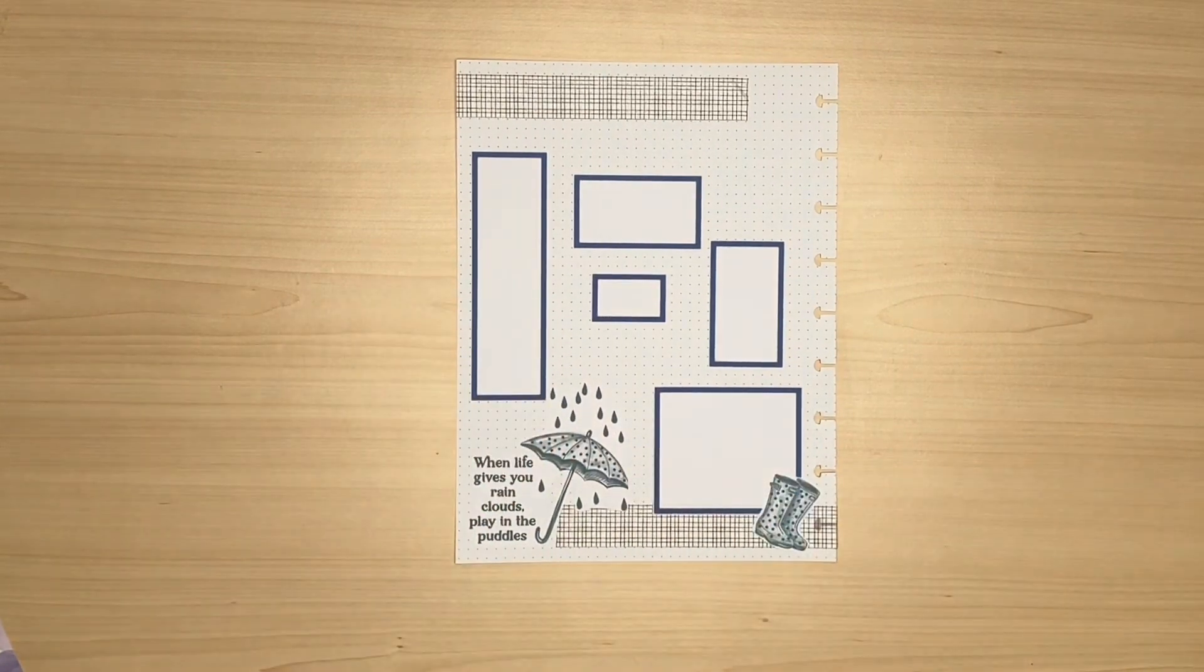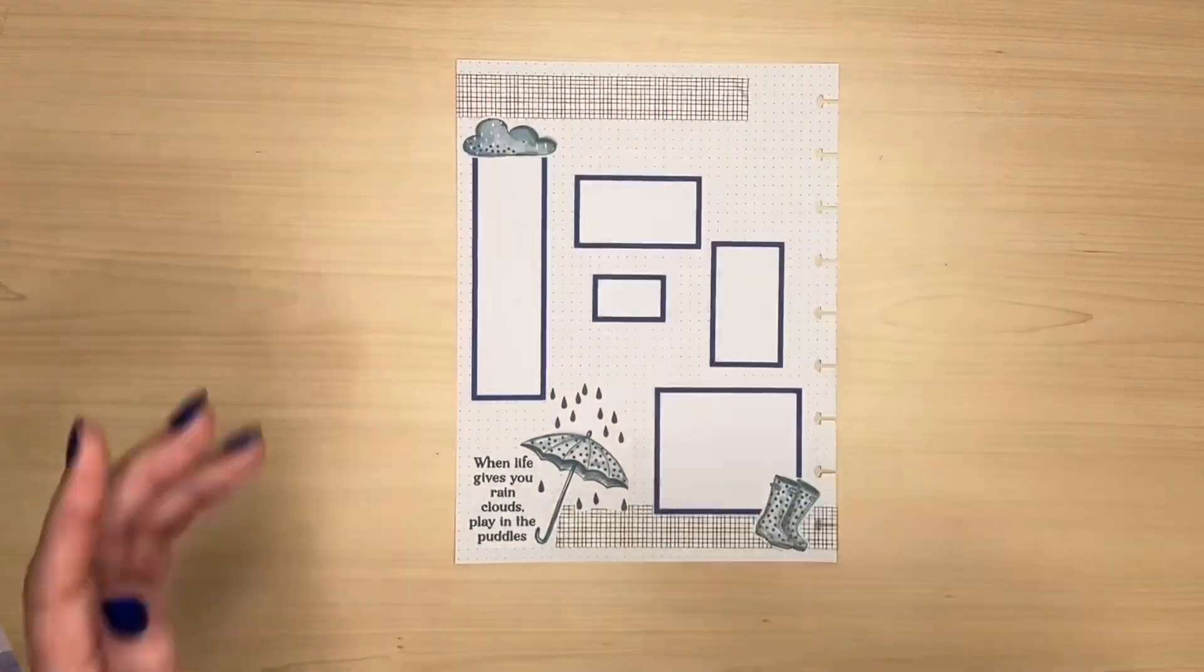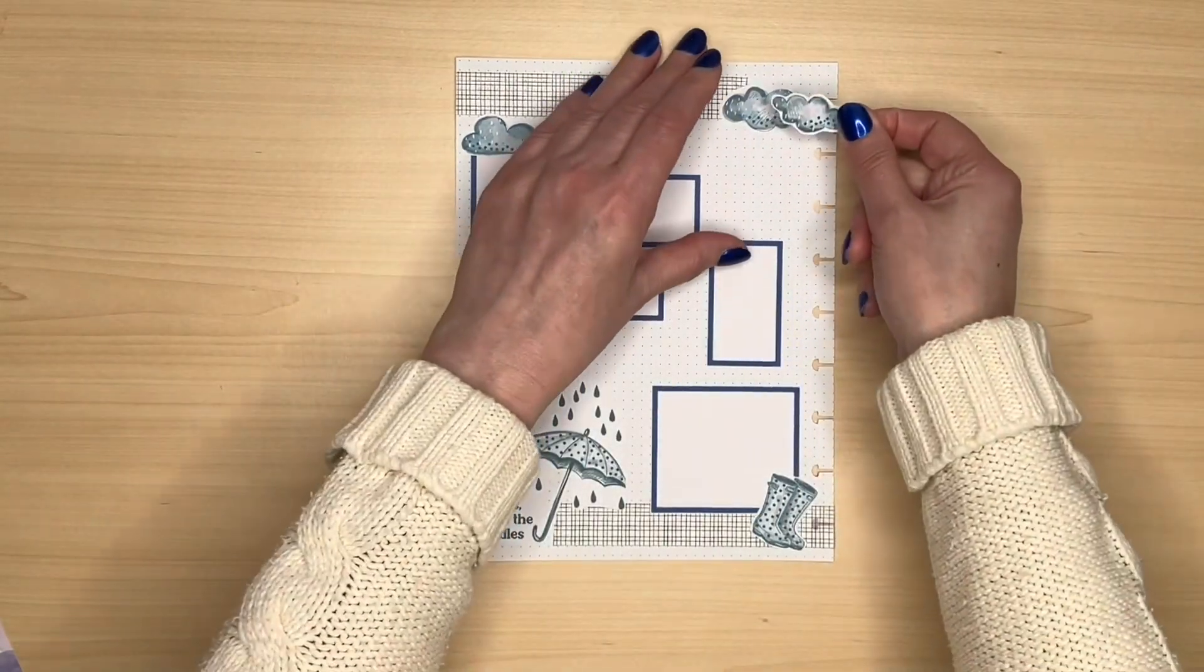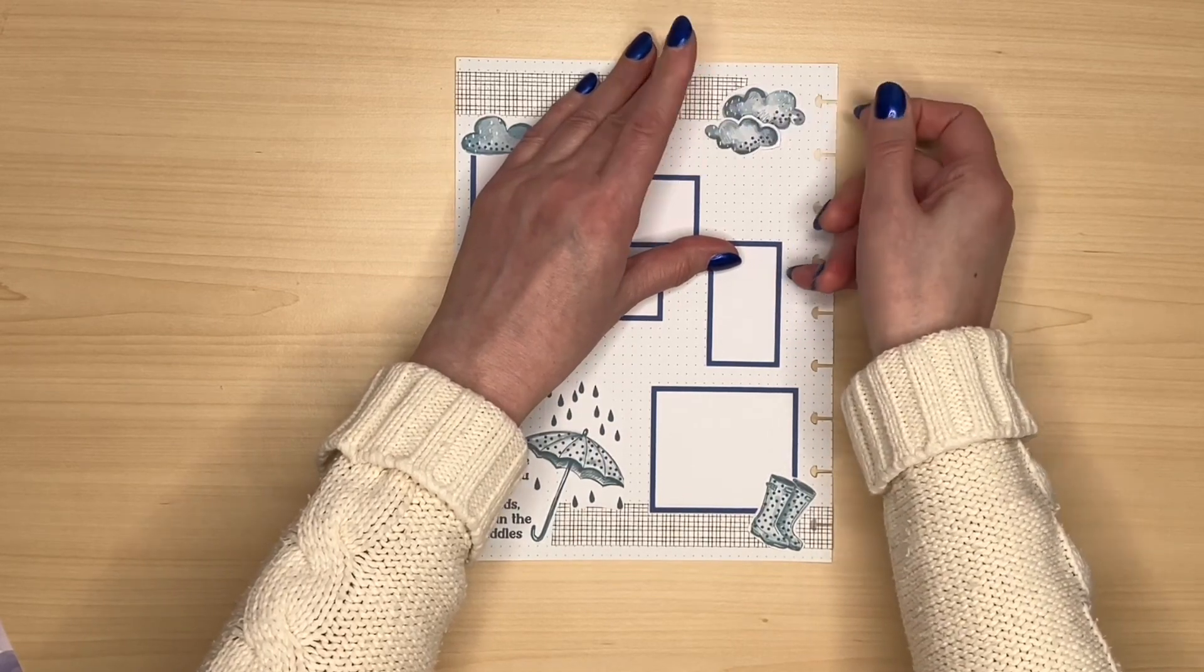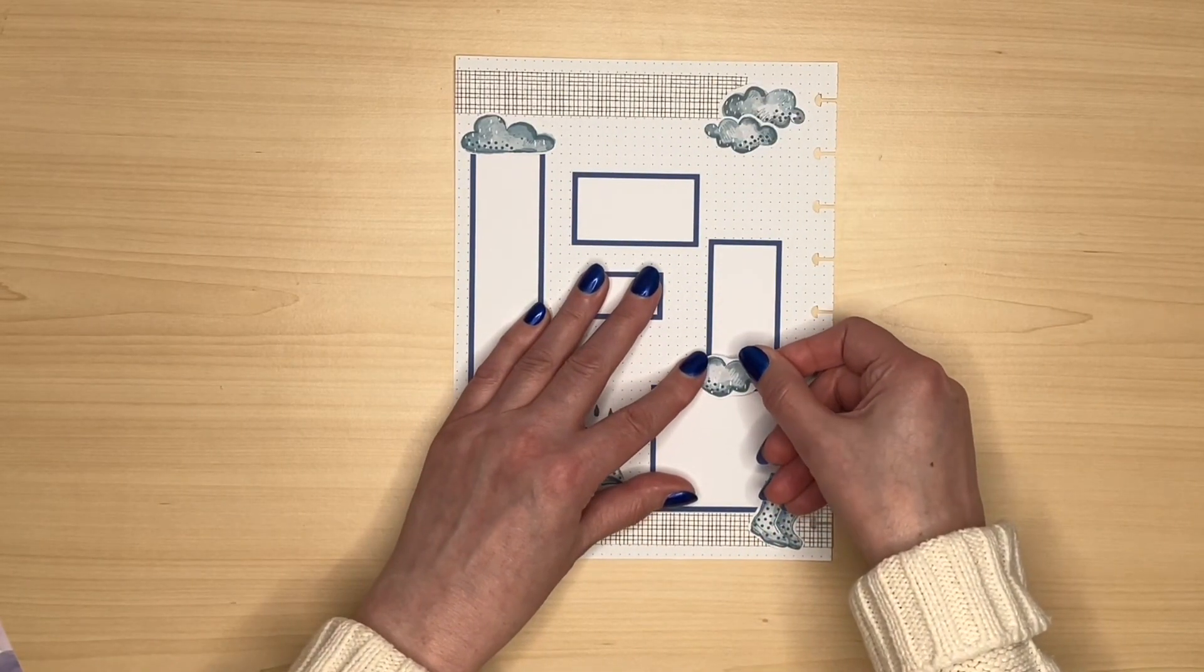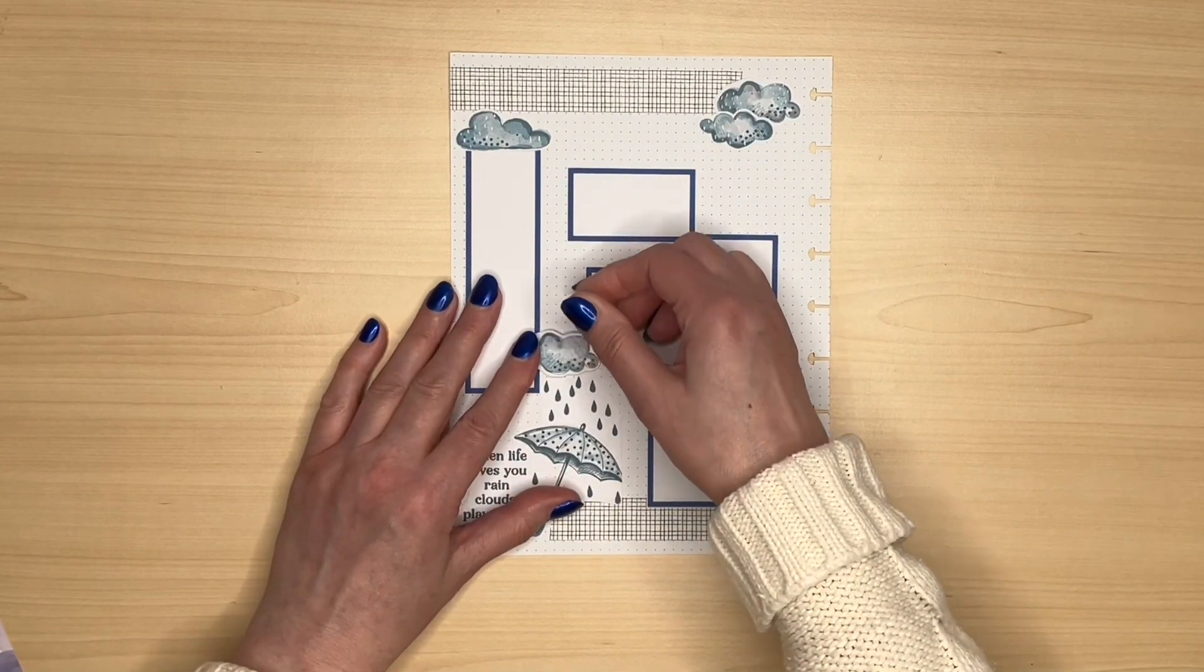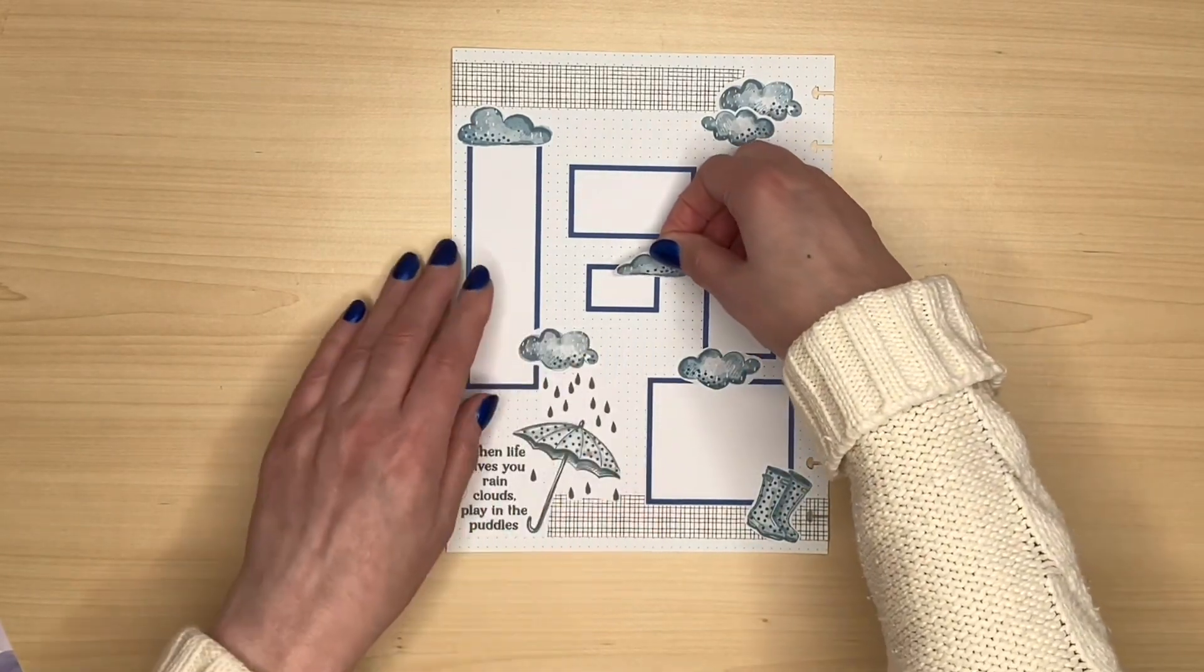I have thought about getting a cutting machine they're very popular and I did used to have something called a craft robo which I think might have been the precursor to the silhouette but all I ever used that for was cutting out alphabet letters which I mainly used for school for when I was doing displays for the children and I never got any further than that.